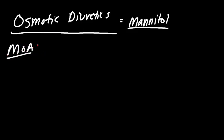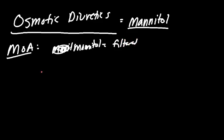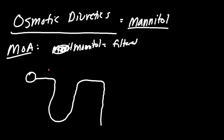The mechanism of action: mannitol will be filtered by the glomerulus. Here's our glomerulus, proximal tubule, descending loop of Henle, ascending limb, DCT, and collecting duct. Mannitol can pass through the glomerulus; however, it's not going to be reabsorbed from the lumen.